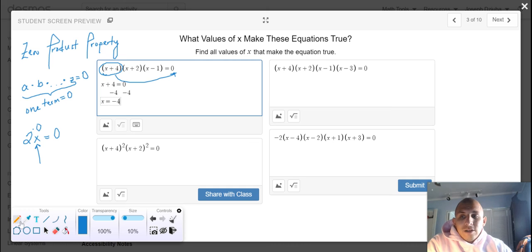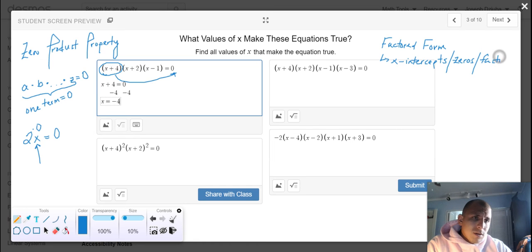Now, these values that we're going to be calculating, since all of these expressions are written in factored form, these values tell us the x-intercepts, which you'll hear me commonly refer to as the zeros or factors of a polynomial.